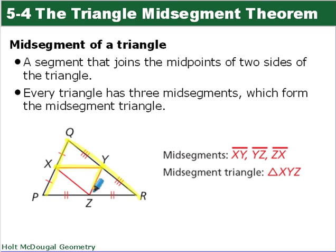Every triangle has three midsegments which form the midsegment triangle. So here is our other midsegment. This is the midsegment. These are the midpoints of PR and QR. And then finally this is a midsegment which joins the midpoints of QP and PR.